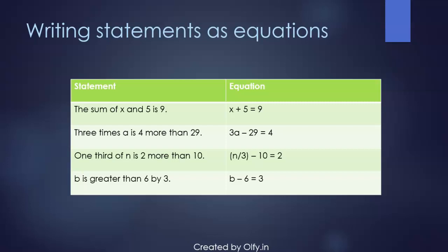The third one is 1 third of n is 2 more than 10. Now 1 third of n can be represented as n upon 3. And what we've been told is that this expression, 1 third of n, is 2 more than 10. That means when you take out 10 from 1 third of n, you still have 2 left. So that's how you write it in the equation format: n upon 3 minus 10 equals 2.